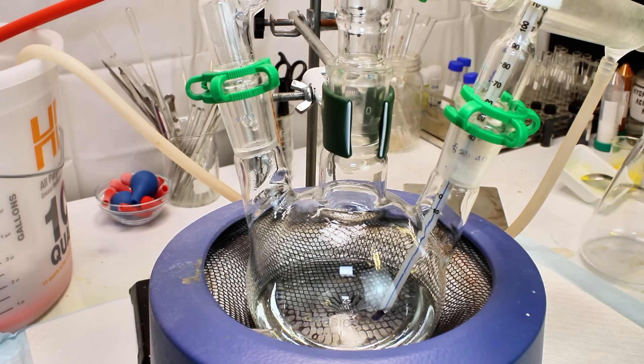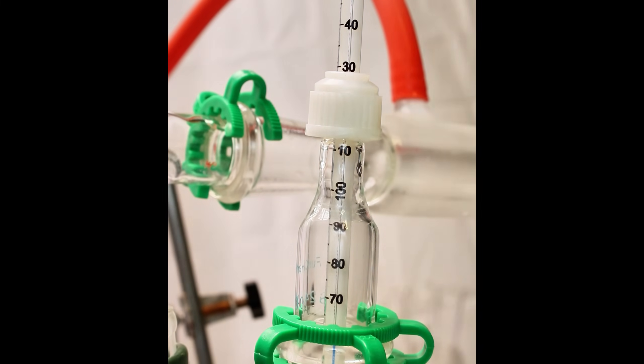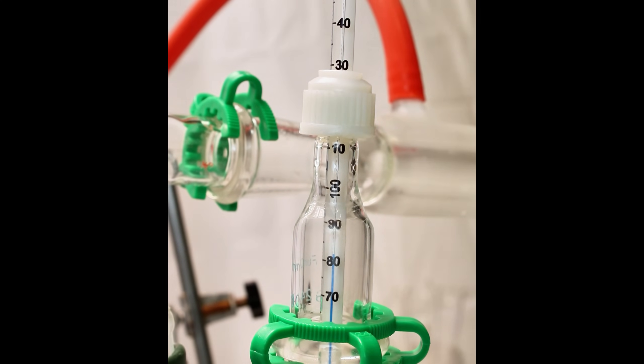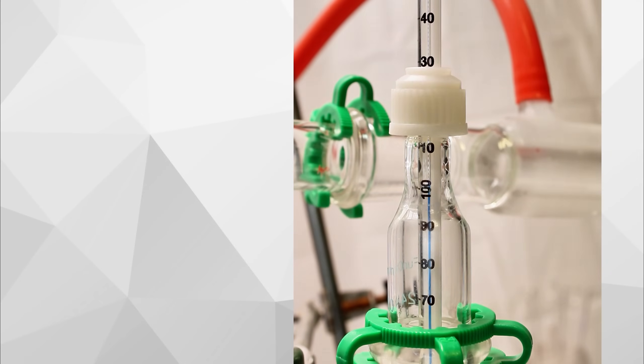Ether has a boiling point of just under 35 degrees Celsius, so almost immediately as it's formed, it will boil away. This ether vapor travels up the distillation head and is condensed back into a liquid, which drips into my collection flask. That's the role of the condenser column. Before I discuss the role of the addition funnel, I need to explain a bit about how this reaction actually works.